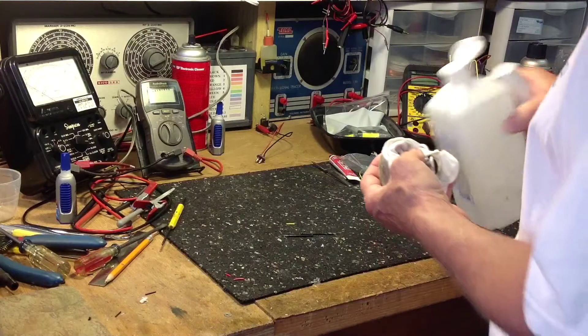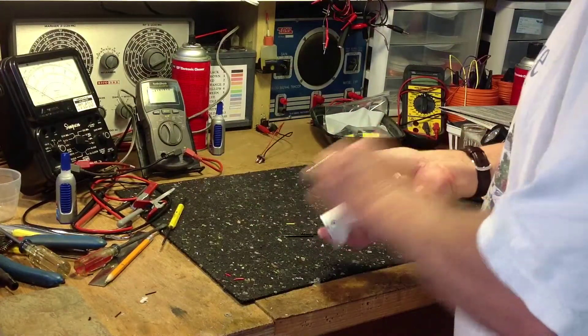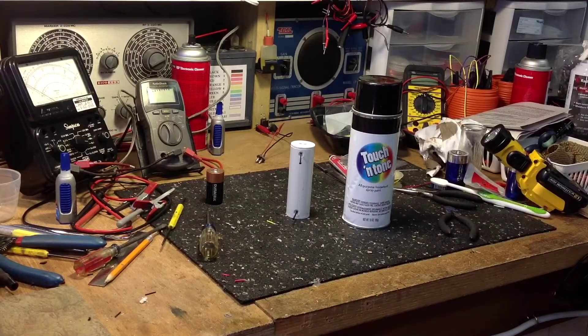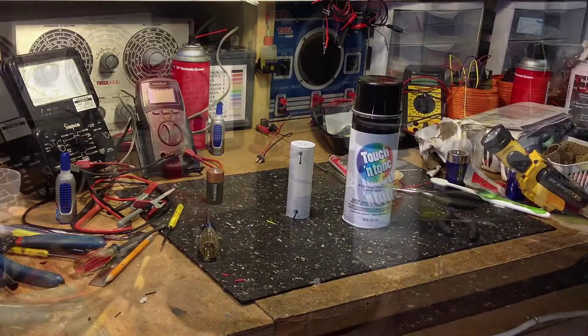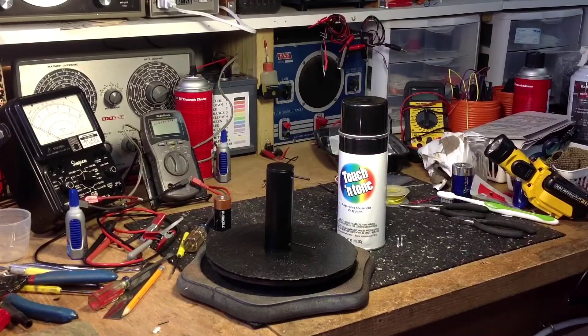Next we're going to clean the body of the Z1 battery with some alcohol. Then I'm going to take it outside and paint it with this black spray paint. The original battery was black and here is ours all finished.